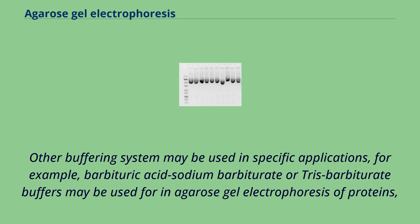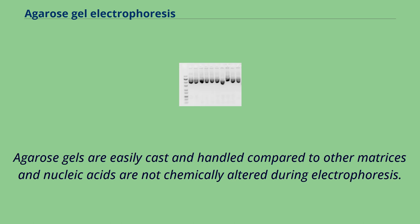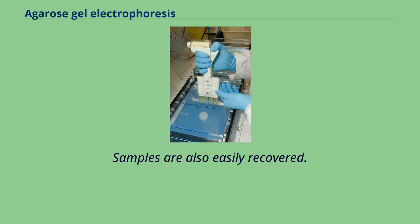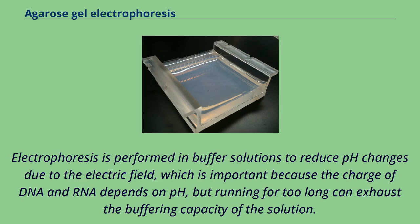Agarose gels are easily cast and handled compared to other matrices, and nucleic acids are not chemically altered during electrophoresis. Samples are also easily recovered after the experiment is finished, and the resulting gel can be stored in a plastic bag in a refrigerator. Electrophoresis is performed in buffer solutions to reduce pH changes due to the electric field, which is important because the charge of DNA and RNA depends on pH. However, running for too long can exhaust the buffering capacity of the solution.